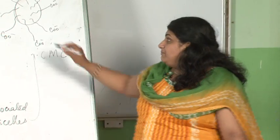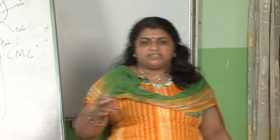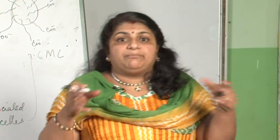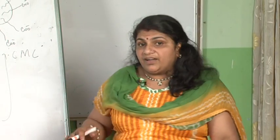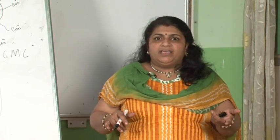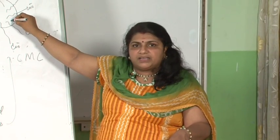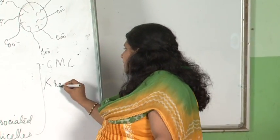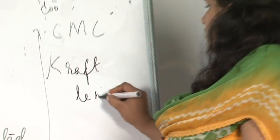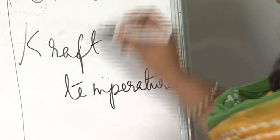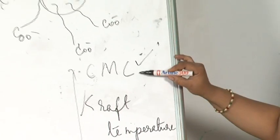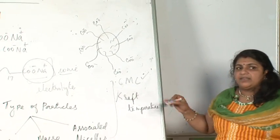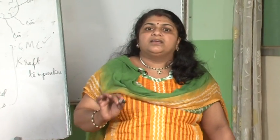Micelle formation takes place only above a particular temperature. In washing machines, you are familiar there is a temperature option — hot wash is preferable for more cleaning of clothes. We don't use cold water because micelle formation will not take place below a particular temperature. The temperature above which micelle formation takes place is called the Krafft temperature.